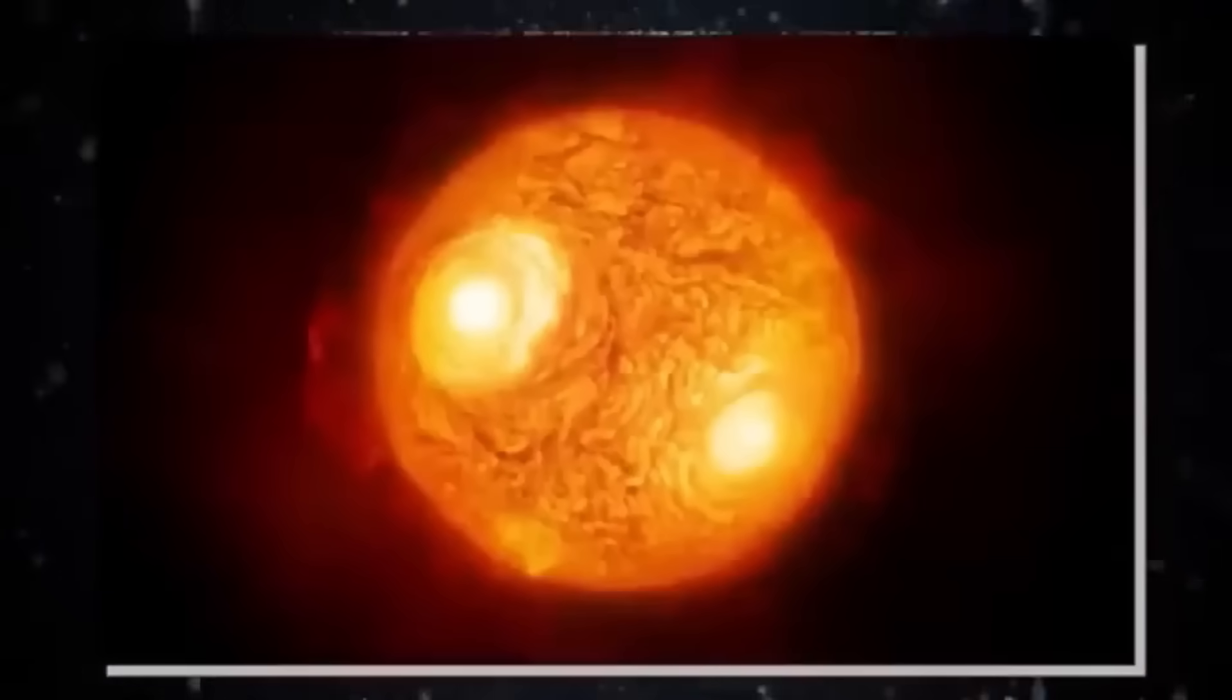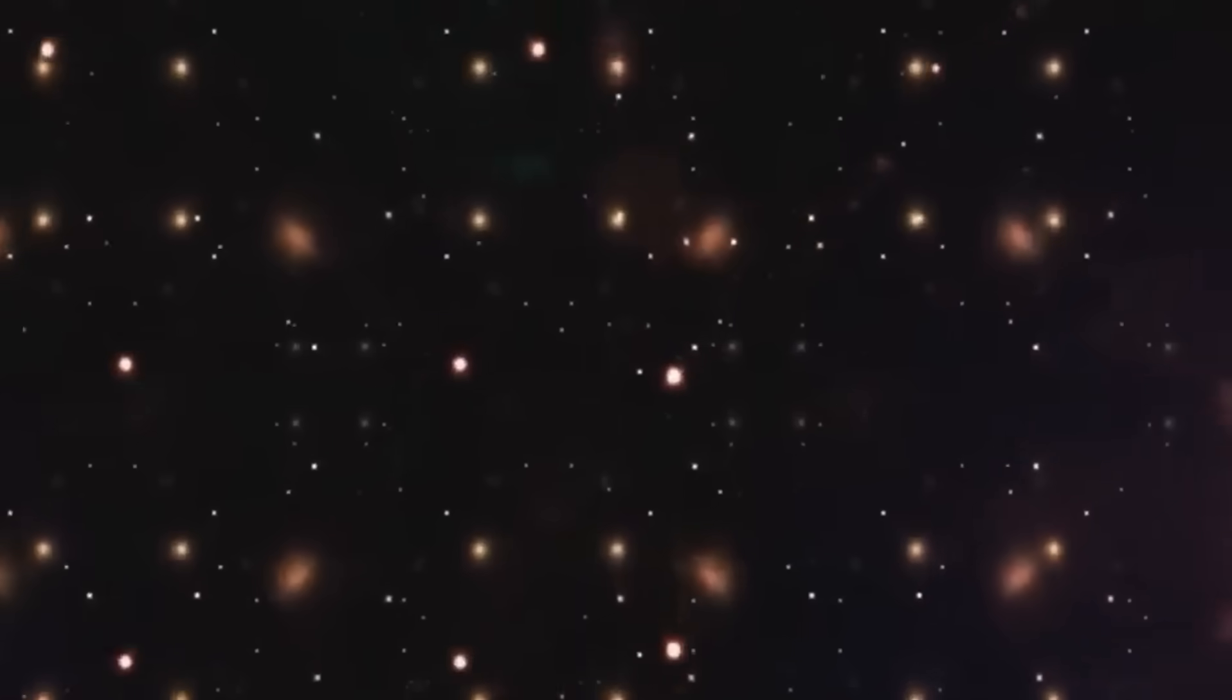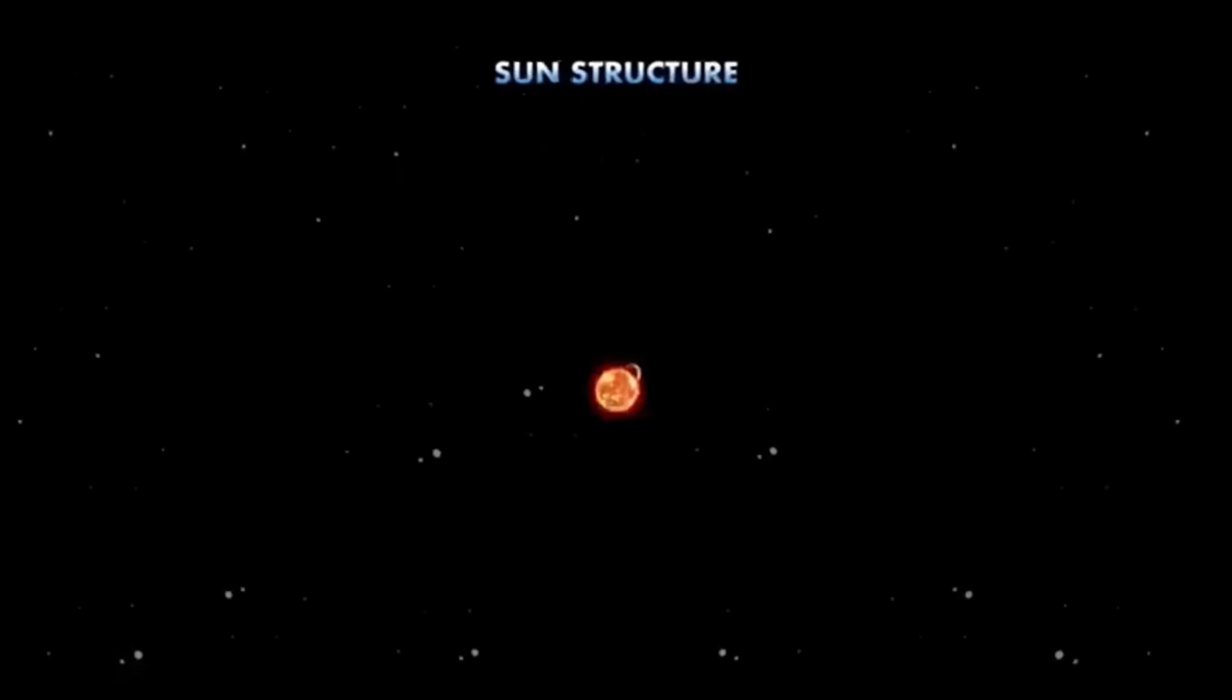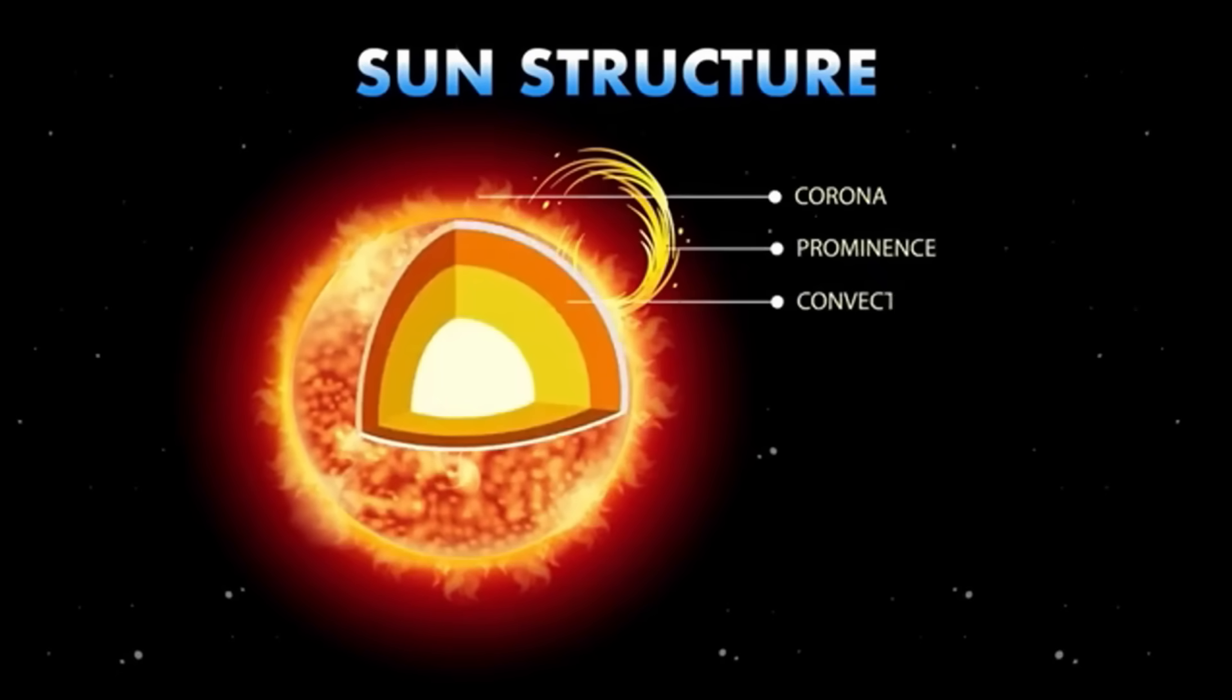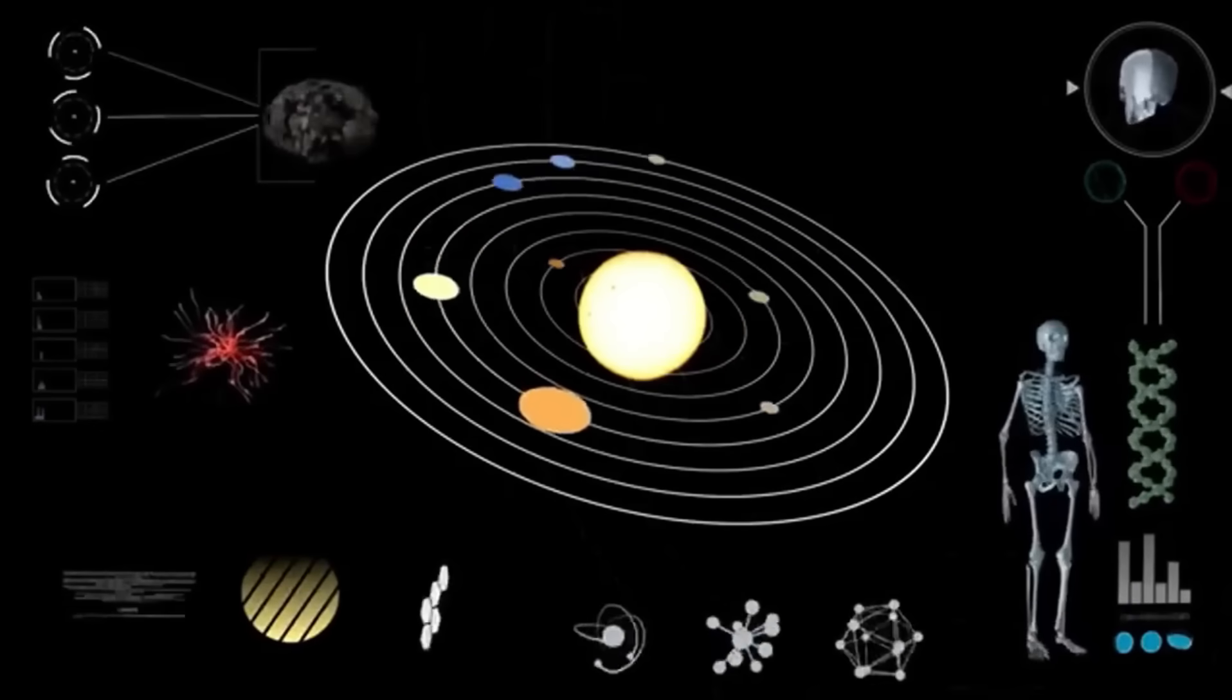Nestled in the constellation of Orion, Betelgeuse is a red supergiant star, massive and ancient beyond our comprehension. It has long been known for its unique reddish glow and its fluctuating brightness. But recent observations have sparked intense interest, especially with the discovery of dramatic shifts in its behavior. At approximately 764 times the size of our sun, Betelgeuse is an absolute giant of a star.